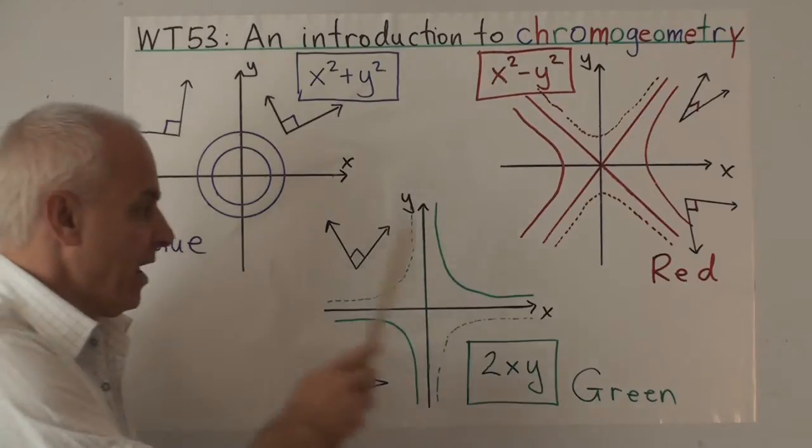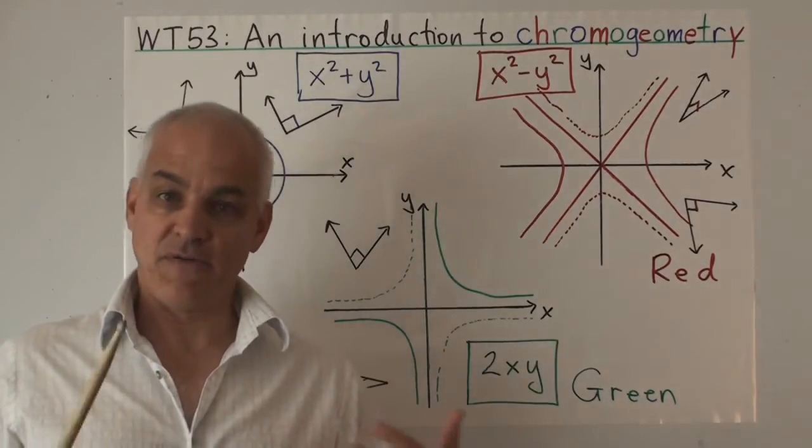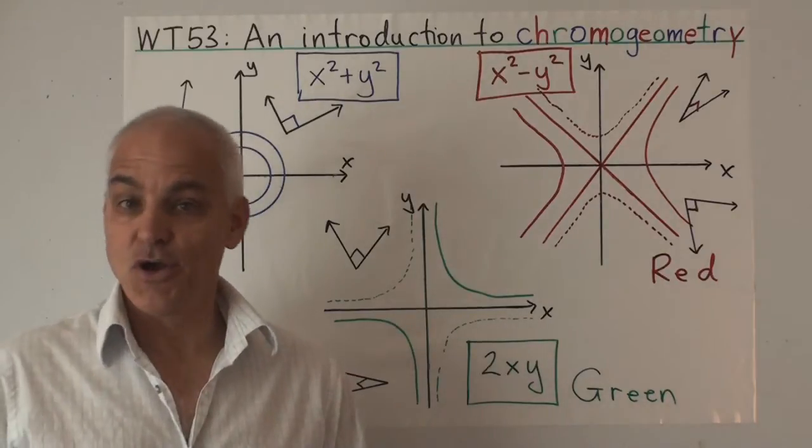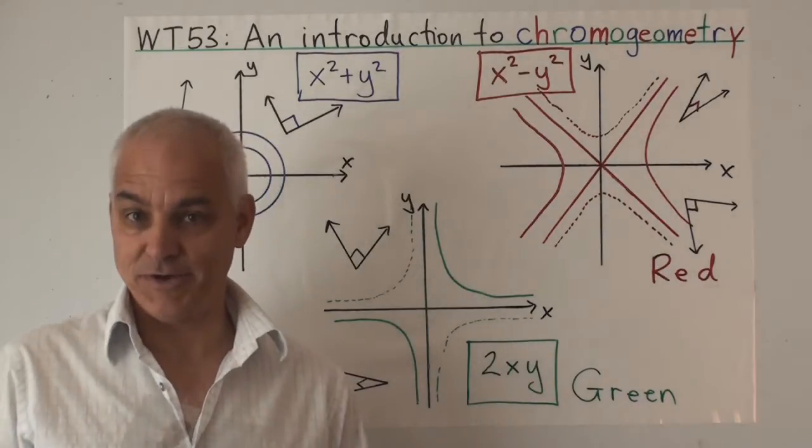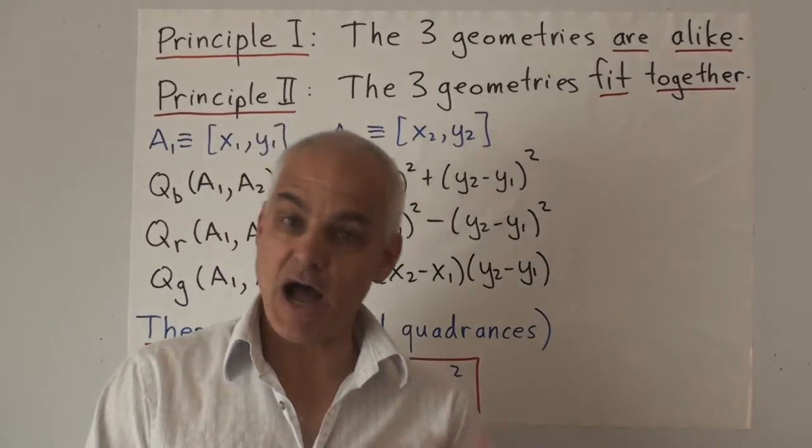So these three geometries, one is Euclidean, the other two are non-Euclidean geometries. These three are going to fit together to form this new subject called chromo geometry.